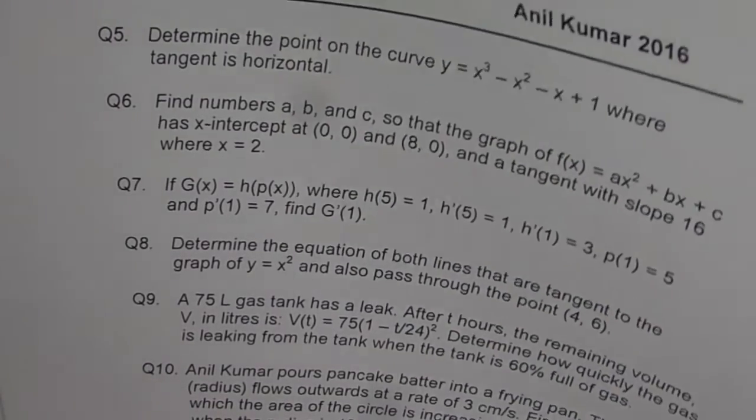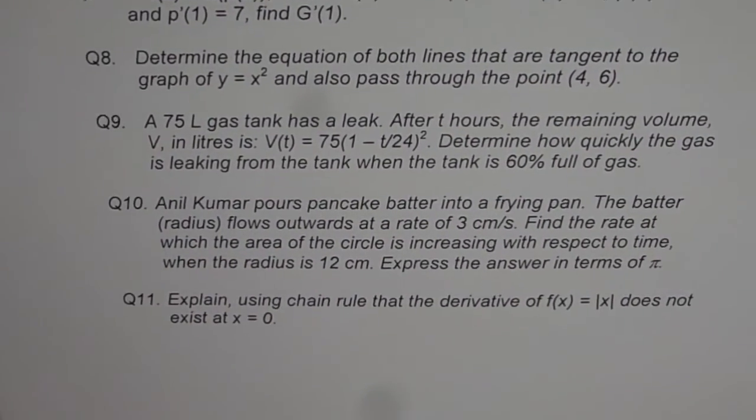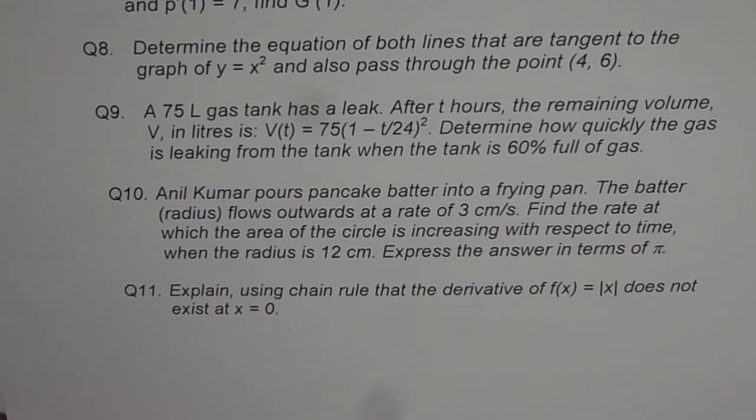Now let me move this sheet forward, copy question number 9, 10 and 11. So these are your application questions. A 75 litre gas tank has a leak, after t hours the remaining volume v in litres is v(t) equals to 75 times (1 minus t/24)². Determine how quickly the gas is leaking from the tank when the tank is 60 percent full of gas.